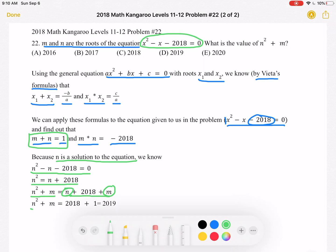So now we know that n² + m is equal to 2018, we already had that, plus the 1. And again, 1 is m + n, the sum of the roots. So that means that n² + m, which again is what we're looking for, must be equal to 2019.